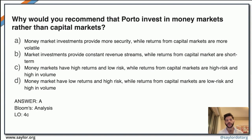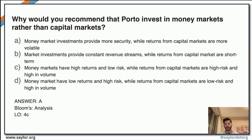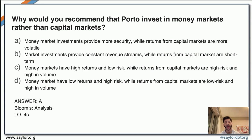The next question is about a recommendation to Porto to invest in money markets rather than capital markets. You need to recall from Unit 4 the differences between these markets. Investing in capital markets can be more volatile compared to money markets, and money markets provide an extra layer of security. The correct answer is A.